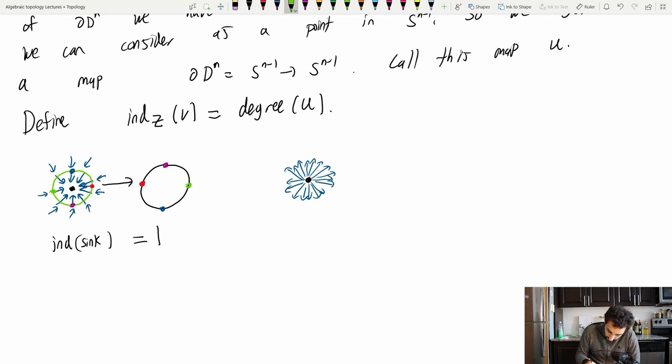And now let's look at this green circle around here. And let's again put in some points. So red, blue, green, purple. And what is this map? Well, at the red point, the vector is pointing right. At the blue point, the vector is pointing up. At the green point, it's pointing left. And at the purple point, it's pointing down. In fact, this map is the identity map, if you think about it. And so the index of a source is also one.